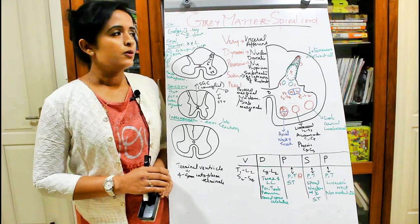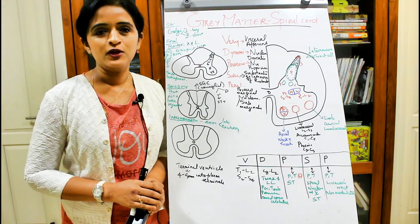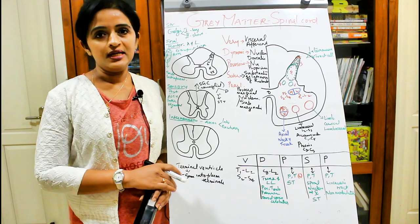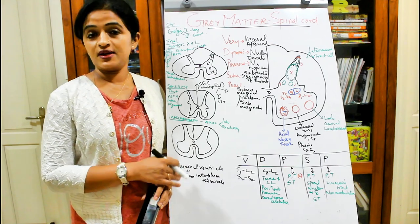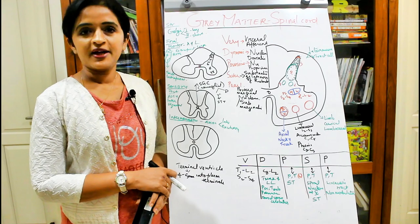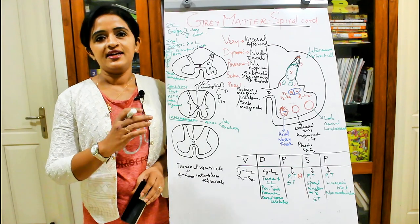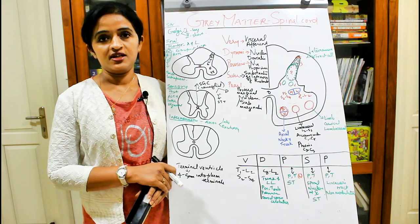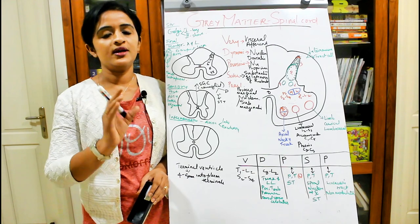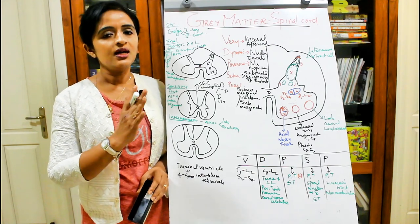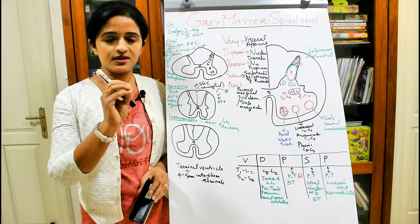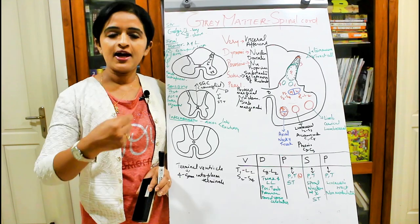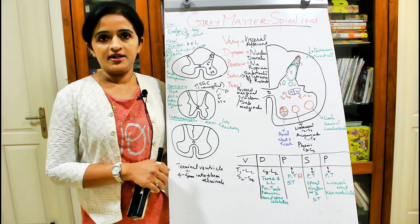Coming to the internal architecture of the spinal cord, we know that we have the white matter outside and the gray matter inside — just the reverse of what we see in the brain. The gray matter consists of cell bodies of neurons, and the white matter consists of the nerve fibers, which are the axons of those same neurons.